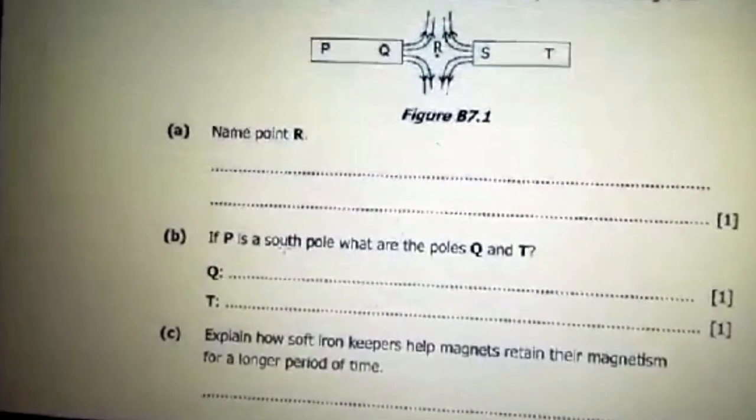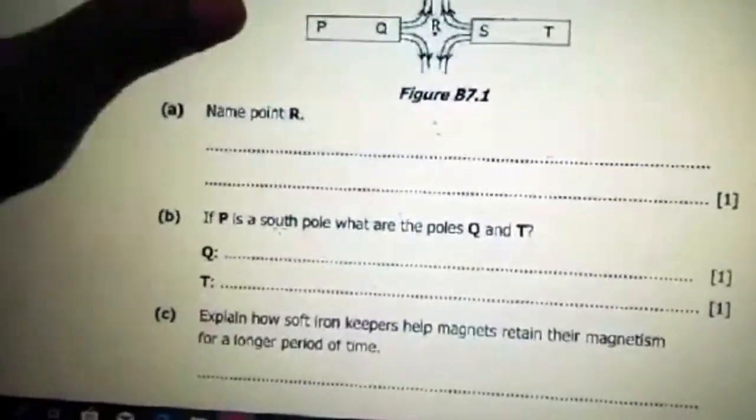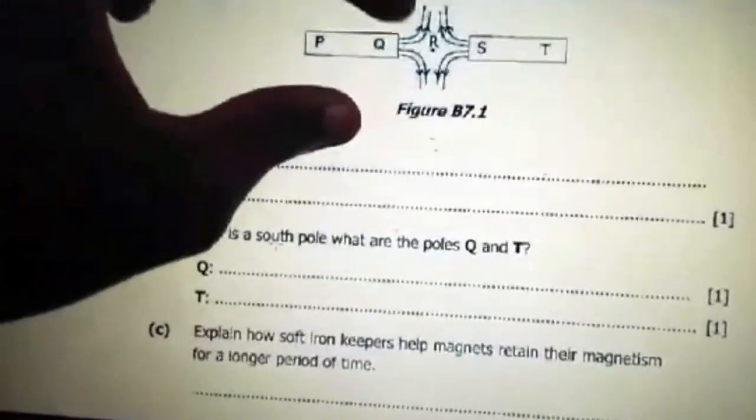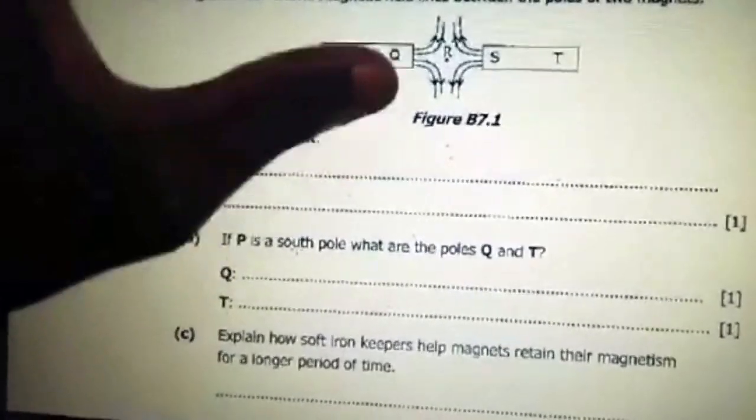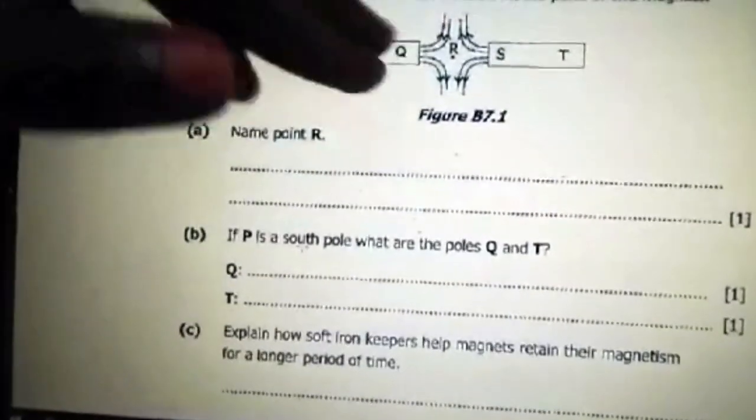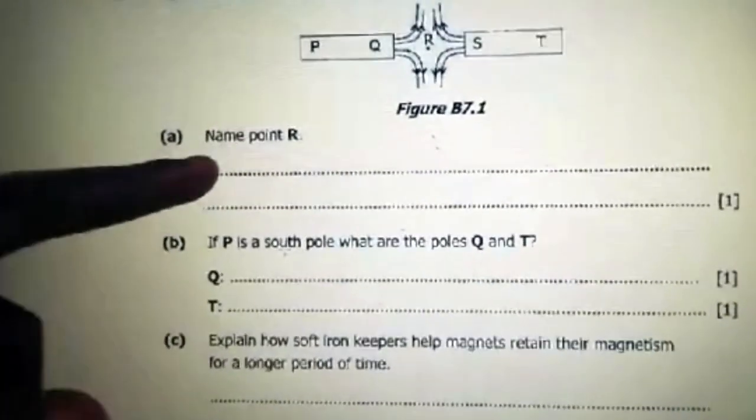We are now on question 7, which shows magnetic field lines between the poles of two magnets at point R. Repulsion is taking place here, and point R is the region where the resultant field intensity is zero. This is the neutral point.